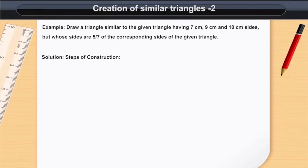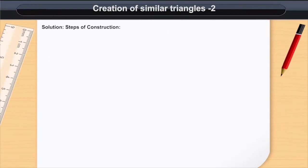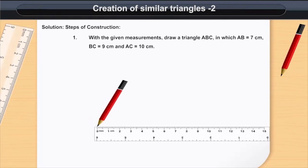Solution: steps of construction. With the given measurements, draw a triangle ABC in which AB is equal to 7 cm, BC is equal to 9 cm and AC is equal to 10 cm.